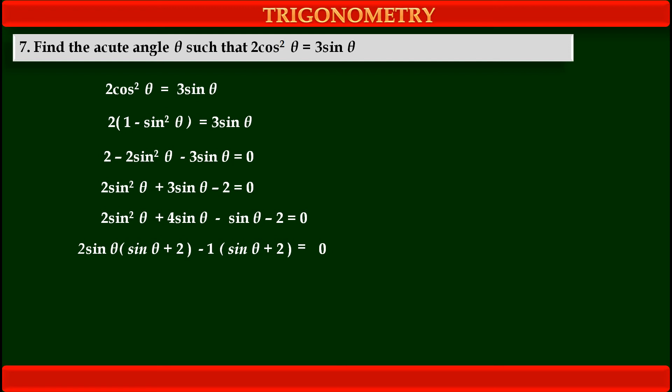Now, this equation has again two terms and both the terms have common factor as one bracket sinθ + 2. So, we can take sinθ + 2 common. So, we get in one bracket common factor sinθ + 2 into another bracket 2sinθ - 1 is equal to right hand side 0.